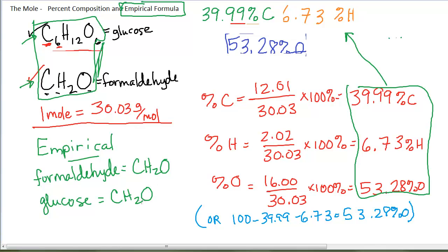For formaldehyde, the empirical formula is CH2O. That is the simplest ratio of the elements in that compound. For glucose, the empirical formula is CH2O. They have exactly the same empirical formula. You're going to get exactly the same percentage of carbon, hydrogen, and oxygen in this compound. And that alone isn't enough to distinguish between these two.